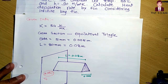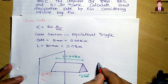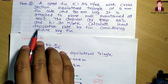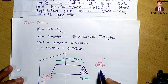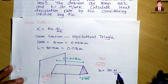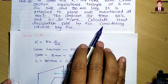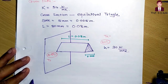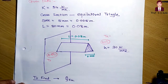T0 is the base temperature, which is 400 degrees Celsius. The ambient air temperature Ta is 50 degrees Celsius. The convection coefficient h for air is given as 90 watts per meter squared per kelvin. We have to calculate the heat dissipation rate from the fin, and the fin is considered to be an infinite long fin.